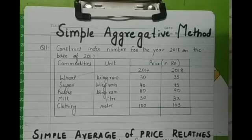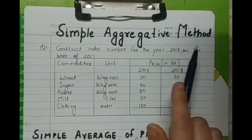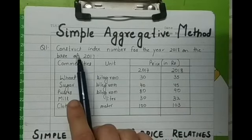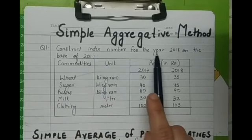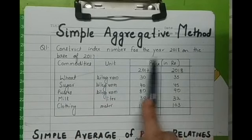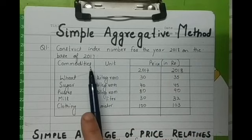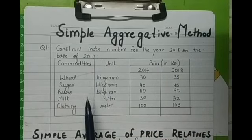So one by one I will be picking up every method. The first numerical that I have picked up is on simple aggregative method. Suppose you have been given a question like this: you have been asked to construct an index number for the year 2018 on the base of 2017, and five commodities are given to you.